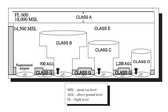Controlled airspace is a generic term that covers the different classifications of airspace and defined dimensions within which air traffic control service is provided in accordance with the airspace classification. Controlled airspace consists of Class A, Class B, Class C, Class D, and Class E. Class A airspace is generally the airspace from 18,000 feet mean sea level up to and including flight level 600, including the airspace overlying the waters within 12 nautical miles of the coast of the 48 contiguous states and Alaska. Unless otherwise authorized, all operations in Class A airspace are conducted under instrument flight rules.